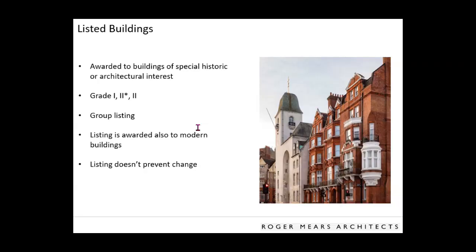What is a listed building? It's something awarded to any building that has a special interest — either historical or architectural. There are different grades. Grade I is buildings of exceptional interest — think Buckingham Palace or Westminster. Then there is Grade II*, somewhere between special and exceptional. And Grade II, which are buildings of special interest, making up about 92% of listed buildings.